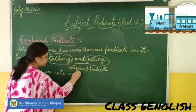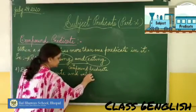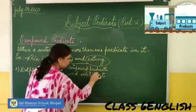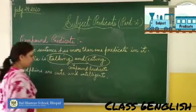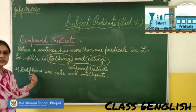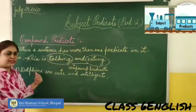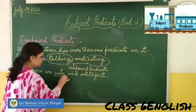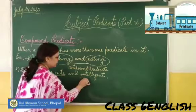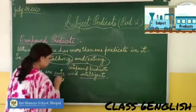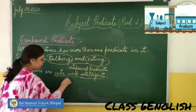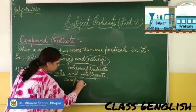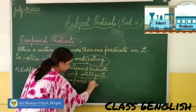The second example: 'Dolphins are cute and intelligent.' Dolphins is the subject here. The predicate is 'cute and intelligent.' Do you see these two words? So that means it is a compound predicate.